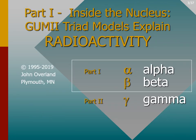The Gummy Baryons discover the ABCs of radioactivity — only they've been called alpha, beta, and gamma since 1899.